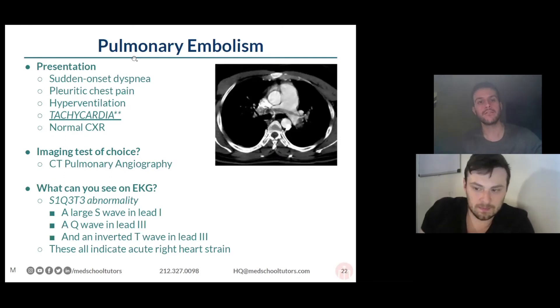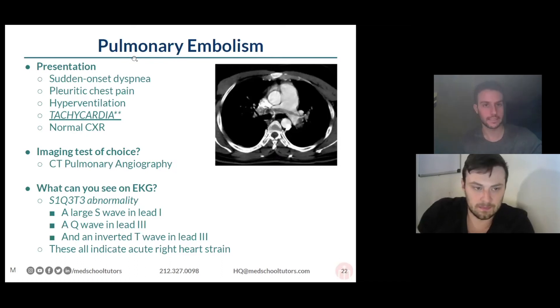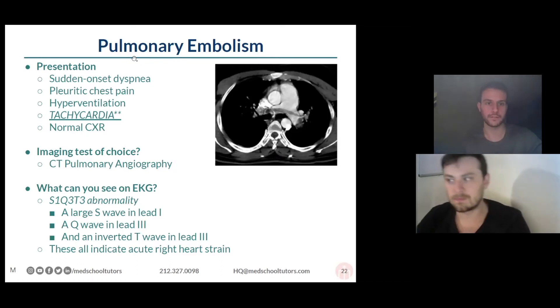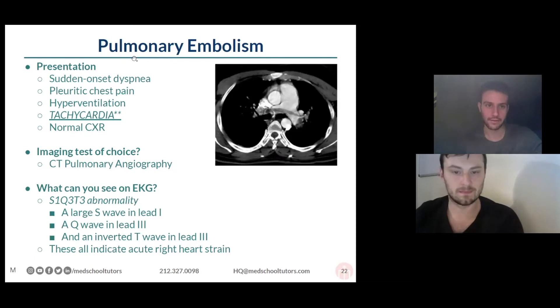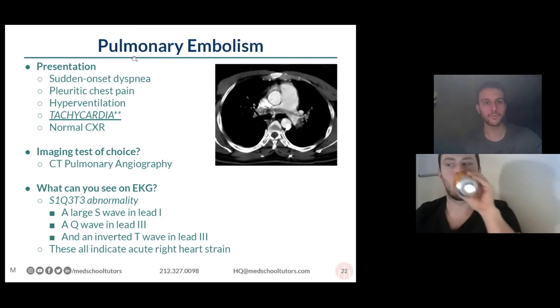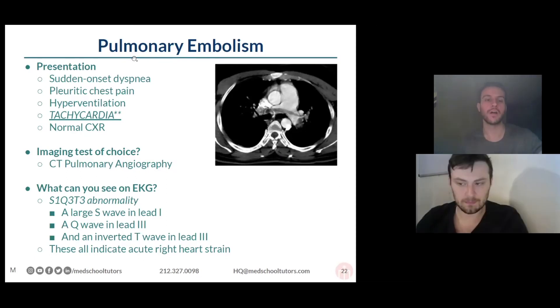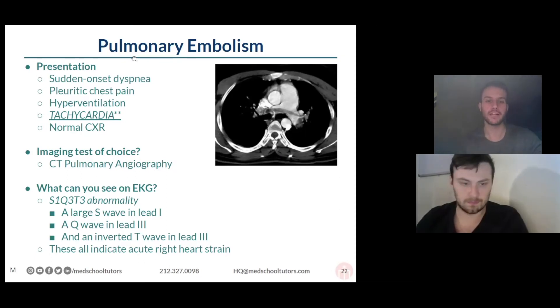Things in a vignette to look for: acute onset — this is something that broke off and went to the lungs — shortness of breath, and pleuritic chest pain. Other things you can also see include hyperventilation and tachycardia.